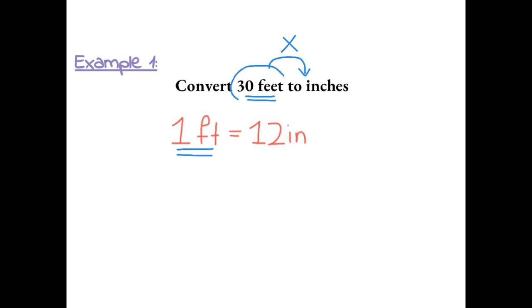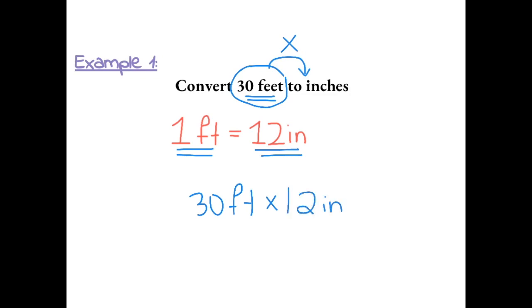So we're going to take what we have, which is 30 feet, and multiply it by 12 inches. This equals 360 inches.